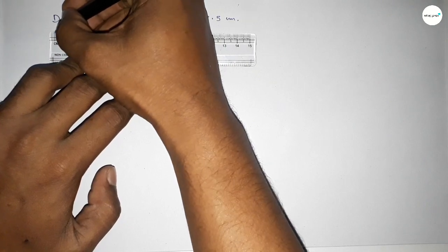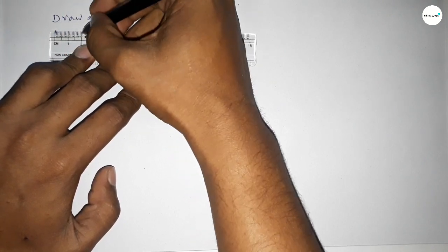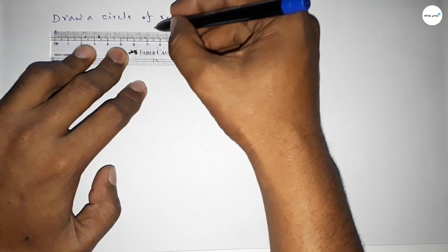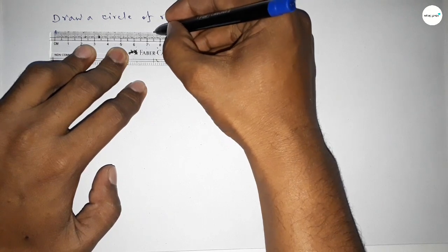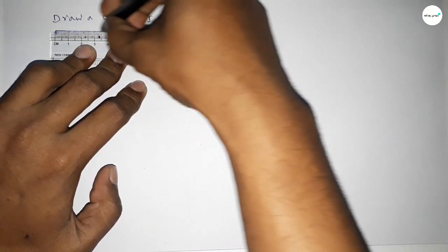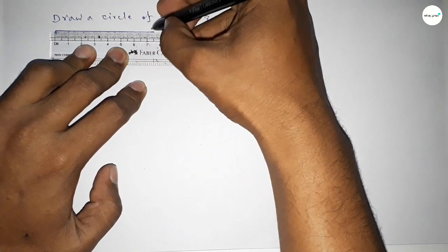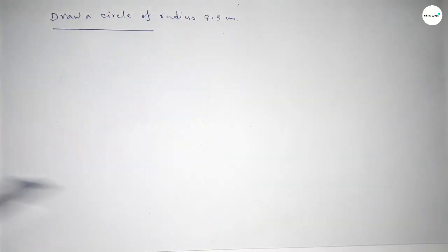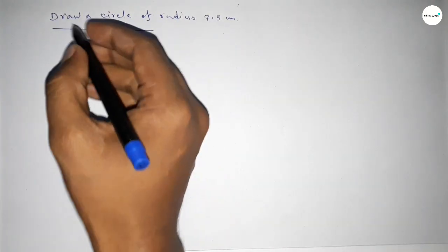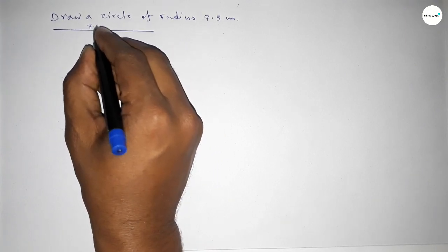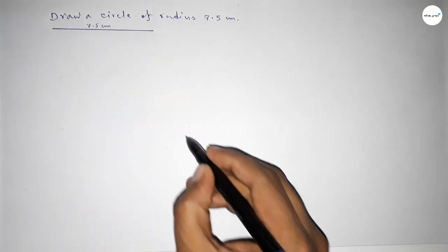So this is starting 0, 1, 2, 3, 4, 5, 6, 7, and this is 7.5. So first we have to draw here the length 7.5 centimeter. Okay, so this is 7.5 centimeter. Now taking here a point.